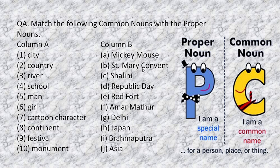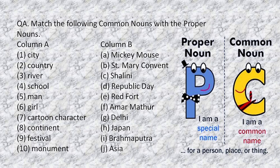Column B has the proper nouns: Mickey Mouse, St. Mary Convent, Shalini, Republic Day, Red Fort, Amar Mathur, Delhi, Japan, Brahamputra, Asia. You have to see which proper nouns are actually the proper nouns of which common nouns. So take your time, enjoy doing this activity, and write the proper answers in front of Column B — the numbering which you think should be written as per the correct choice picked by you.